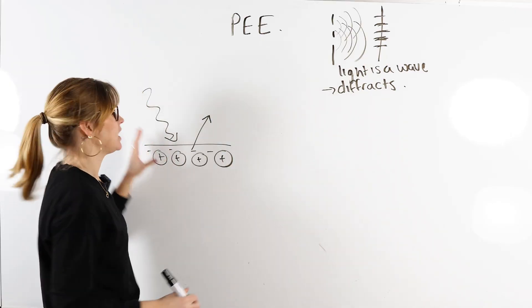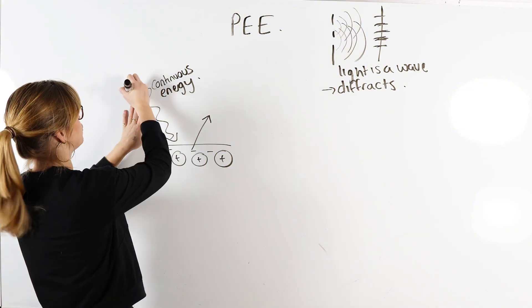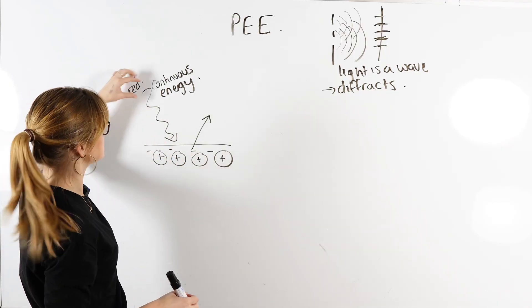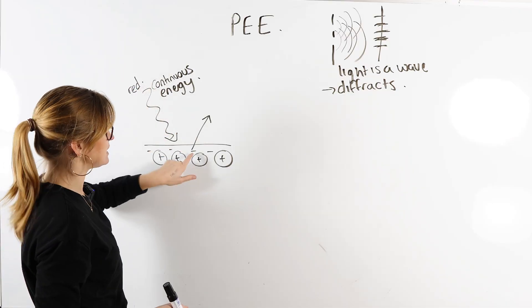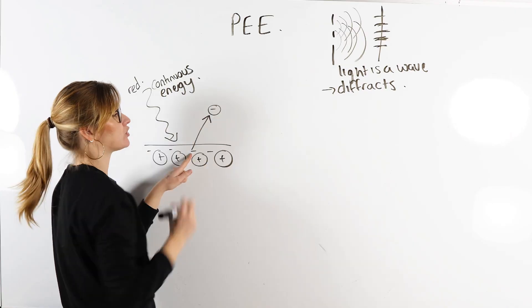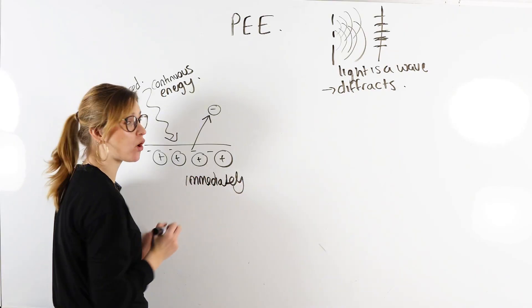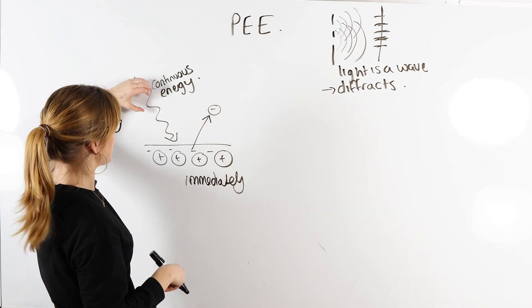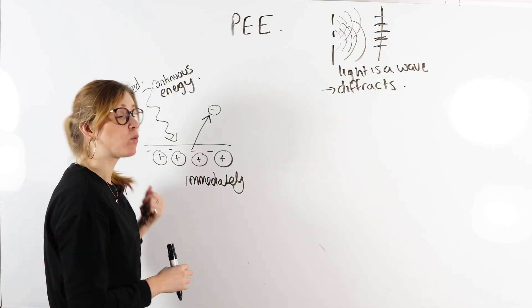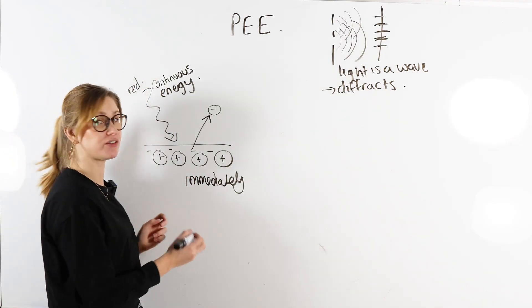If light was a wave, this light wave would be continuous energy. So for example, if you shone red light at the surface of the metal, it doesn't matter what the energy of the light is, because it's continuous energy — it's constantly supplying energy. Eventually the electrons could just keep accumulating energy until they have enough to completely escape the surface. But what they actually saw was that either an electron is emitted immediately, or not at all. Either the wave of light had enough energy to completely remove an electron straight away, or it didn't happen at all because the energy of the light was too low.